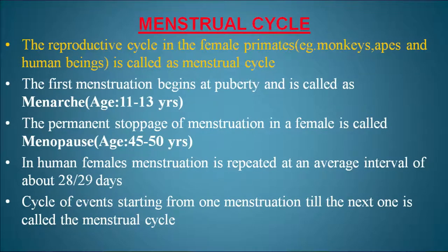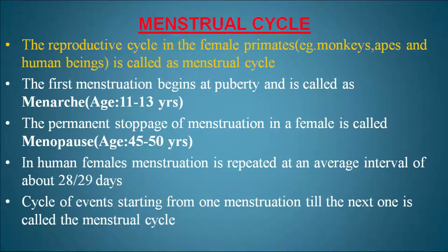The permanent stoppage or cessation of menstruation in a female is called menopause, which is seen at the age of 45 to 50 years. In human females, menstruation is repeated at an average interval of 28 to 29 days. The cycle of events starting from one menstruation till the next is called the menstrual cycle, which can be divided mainly into three phases.